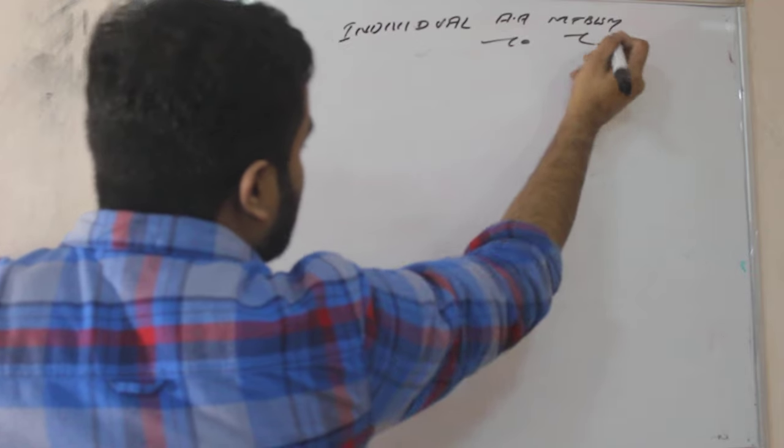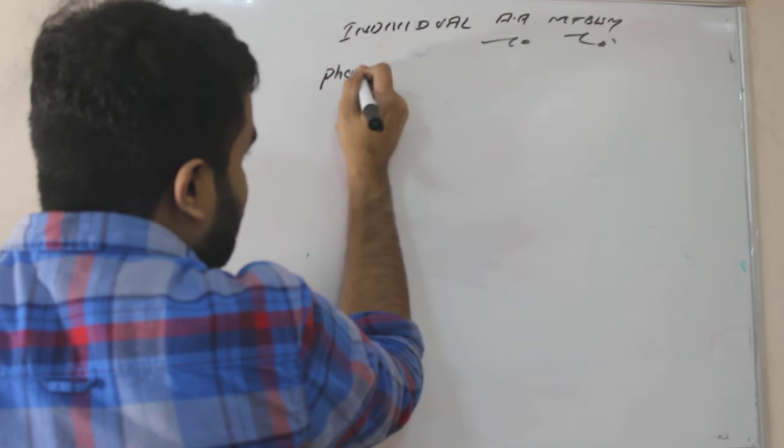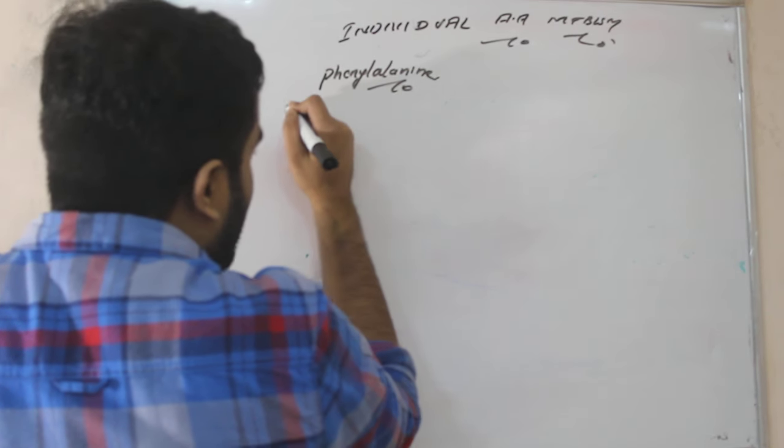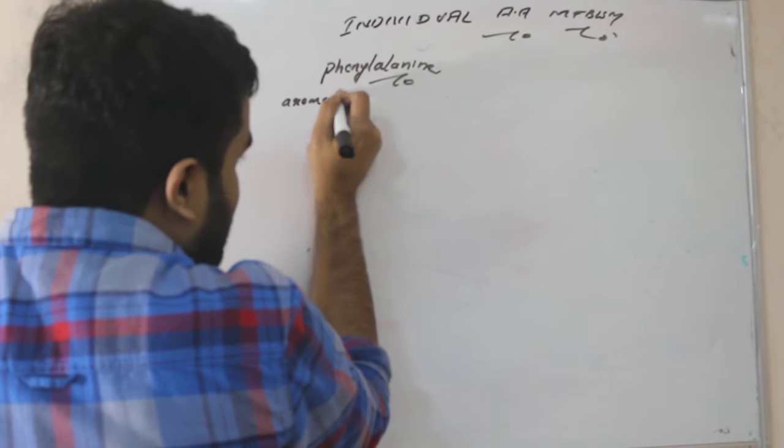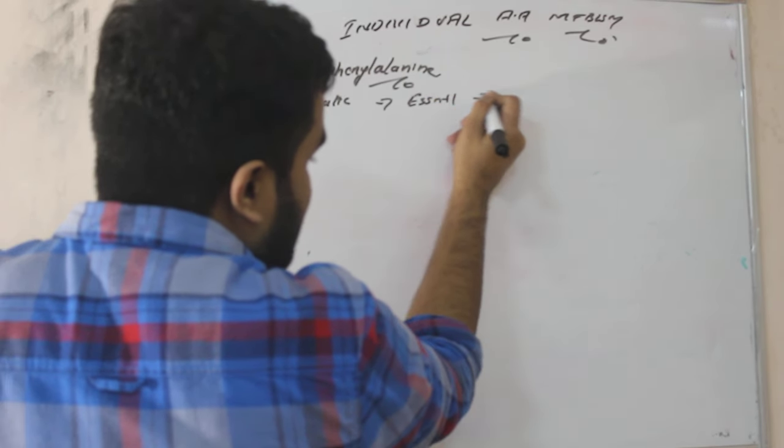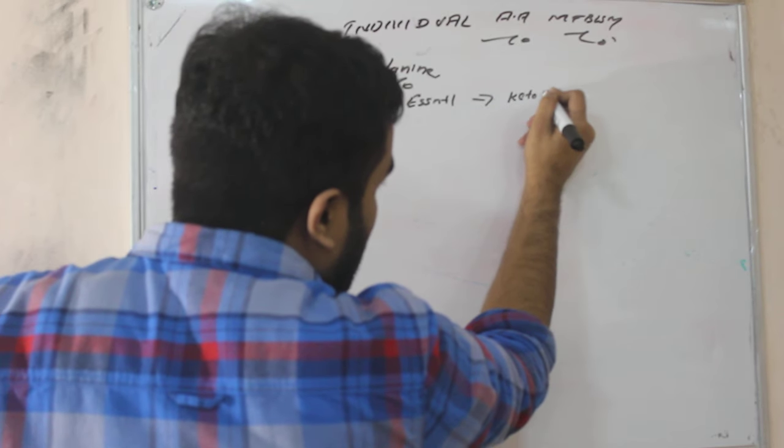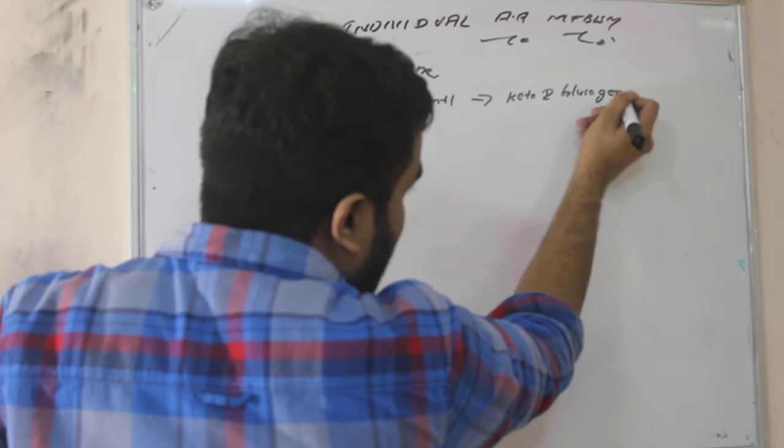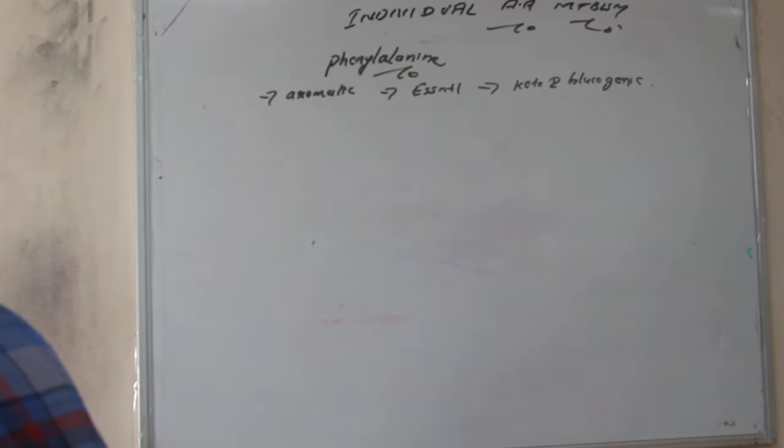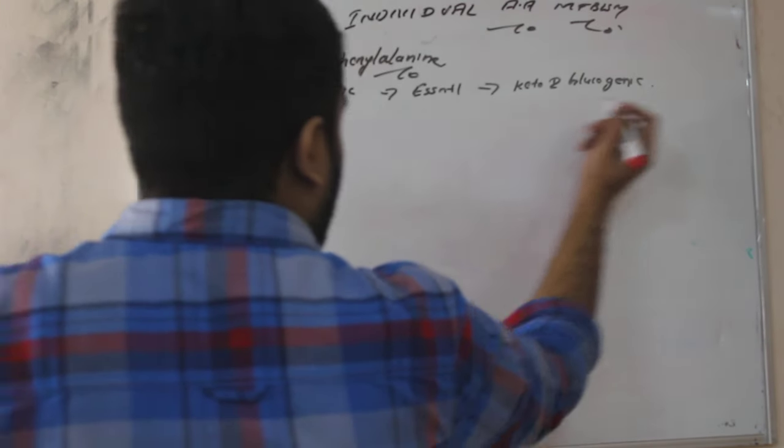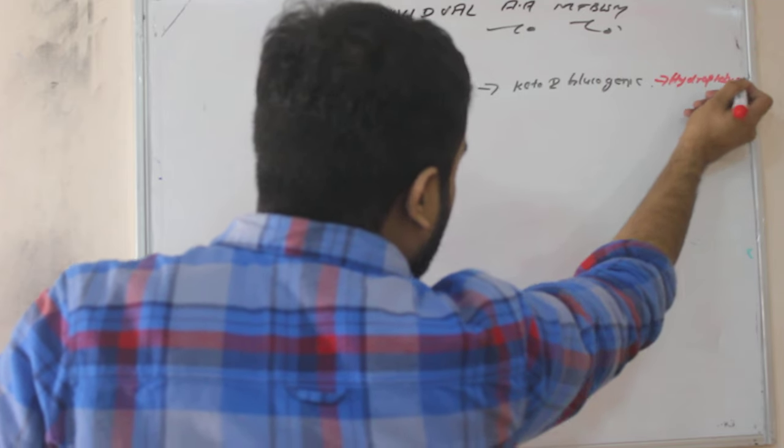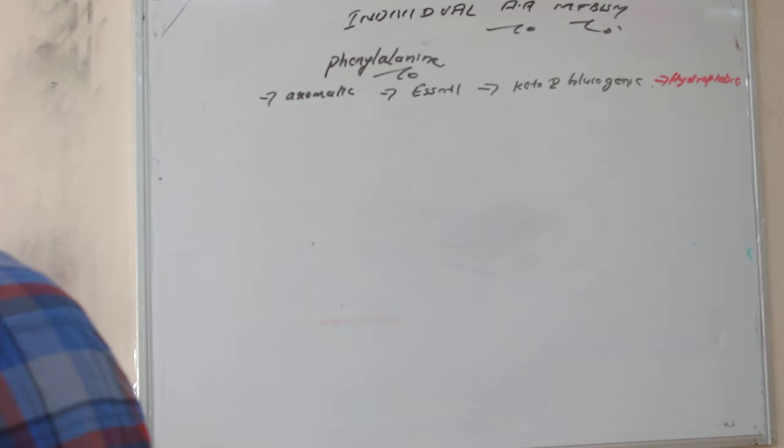So first we will start with phenylalanine. Phenylalanine, we have to talk about what is an aromatic type, right? This aromatic, this essential or non-essential? This is essential. This is ketogenic and glucogenic. We have already discussed in the earlier videos. Now we are studying one more important point - hydrophobic. Remember this is hydrophobic. Now we will study the metabolism.